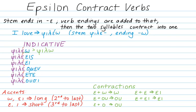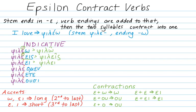In our first form, phileo, the epsilon plus omega contracts to omega. Now we apply our accent. Since the accent was an acute and it got merged together into the contraction, it becomes a circumflex on our final syllable, giving us philō. In phileas, epsilon plus alpha gives us alpha, and again it becomes a circumflex accent: phileâs. The same thing happens in the third singular — epsilon-epsilon contracts to eta, and the last syllable gets a circumflex: philê.